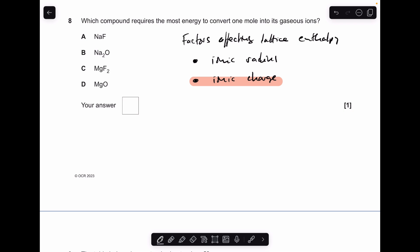Number 8 is testing our knowledge of the factors affecting lattice enthalpy. So this is the reverse of lattice enthalpy. So we're breaking down the lattice, not forming the lattice. But the factors are still the same. So ionic radius and ionic charge. I've highlighted ionic charge because that's going to help us get the answer. So there's all the charges of the ions involved in these lattices. So D will have the greatest attraction because you've got plus 2 with minus 2.